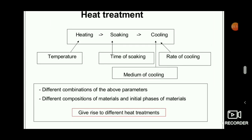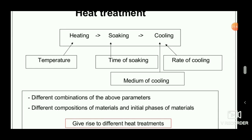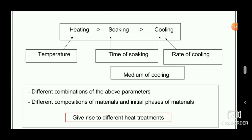Each of these processes involves key parameters. For heating, the important parameter is the target temperature. For soaking, the parameter is the soaking time, which matters a lot in determining the microstructure and properties of the metal. For cooling, the important parameter is the rate of cooling — how fast the metal is cooled to room temperature.